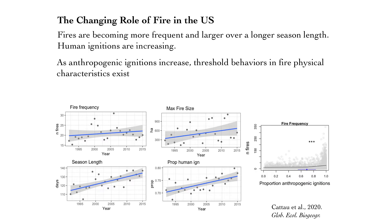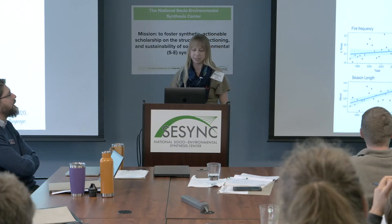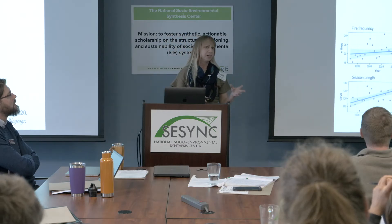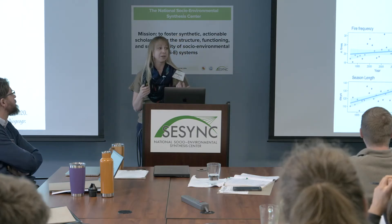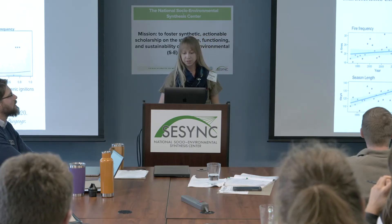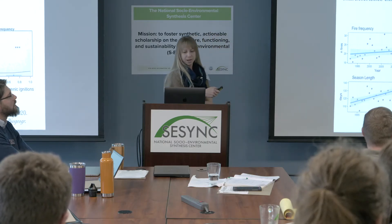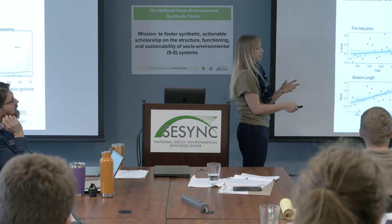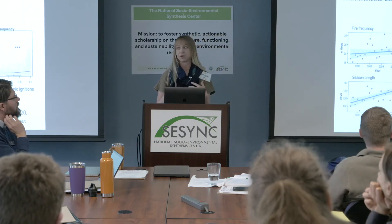There's about a 9% proportional increase from 1992 to 2015 in human ignitions relative to lightning ignitions. In terms of fire size increases, this is true for our mean and our maximum fires, meaning that our average fires are getting bigger and our most extreme fires in terms of size are also getting bigger at a national scale. We also find some threshold behaviors in response to human ignitions: the proportion of human ignitions has a positive relationship with fire frequency after a threshold of about 70% human ignitions.